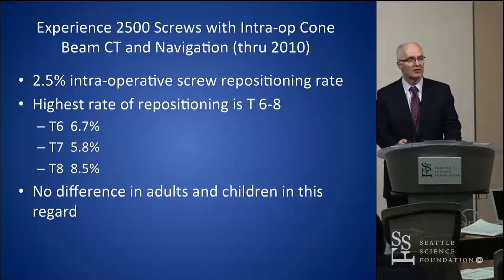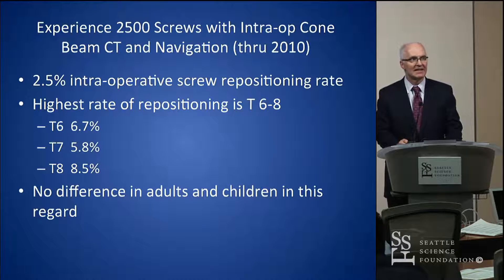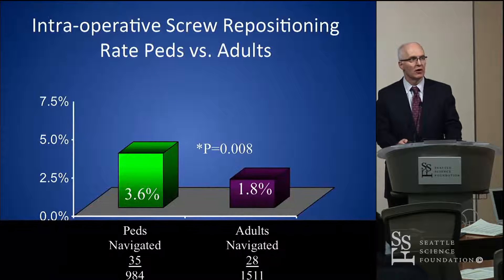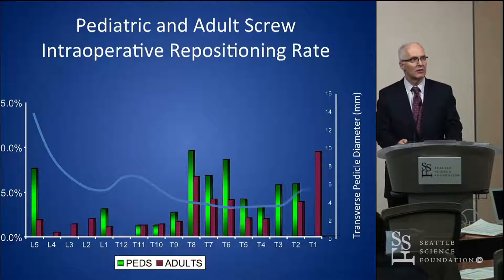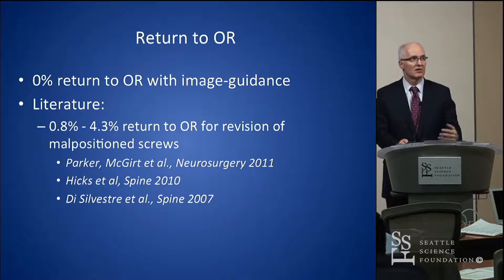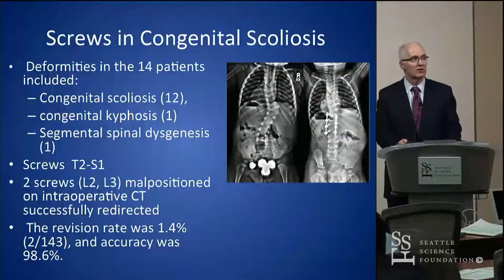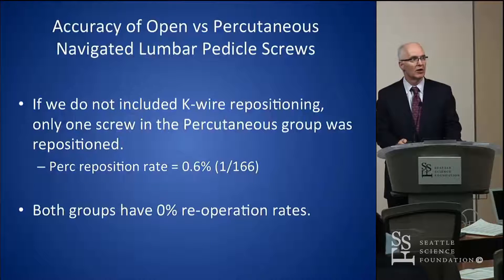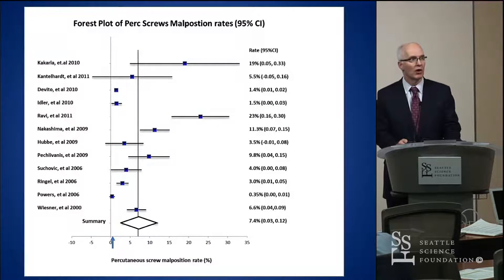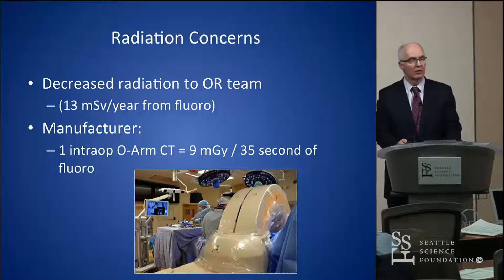Our updated series with navigation covers 2,500 screws, with a 2.5% intraoperative reposition rate. The T6 to T8 range was still the problem area, with no significant difference between children and adults, though slightly higher reposition rate in pediatric cases. Compared to the literature, we were better. Once you get below 4 millimeters pedicle size, the revision rate gets much higher. Return to OR: zero in 10 years, versus a 1–4% rate in the literature. Congenital scoliosis was tougher — 19% of the time we couldn't place screws because there were no pedicles. Our percutaneous screw series showed one screw out of 166 needed repositioning, with no returns to the OR.